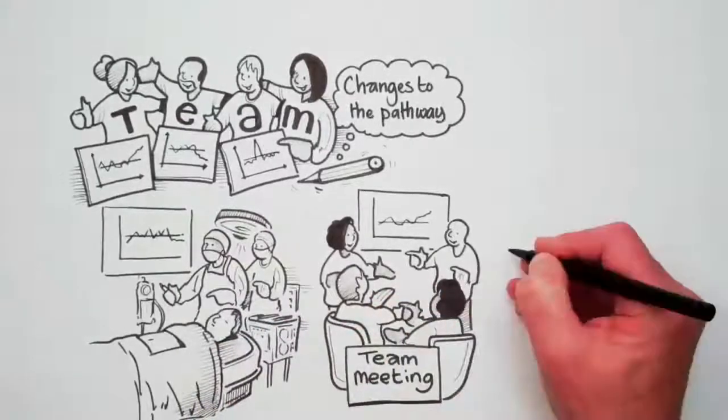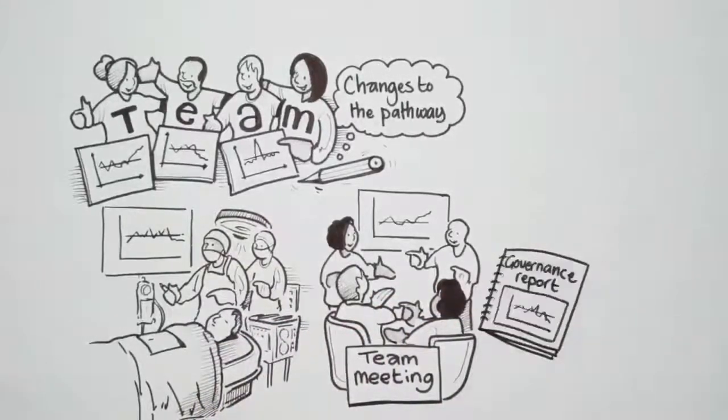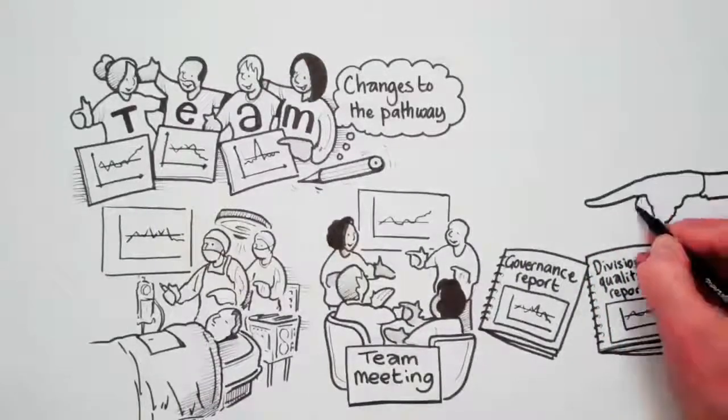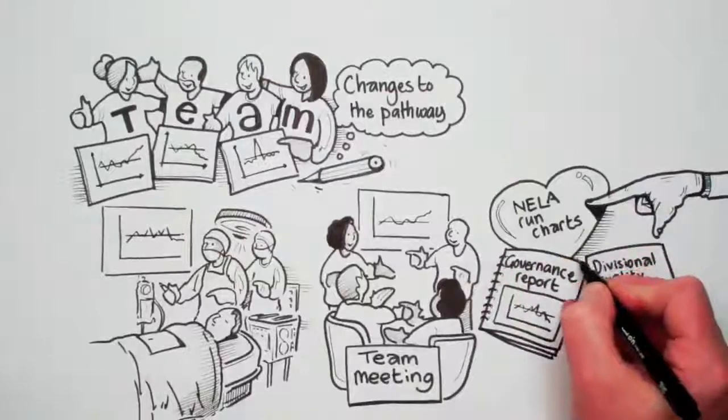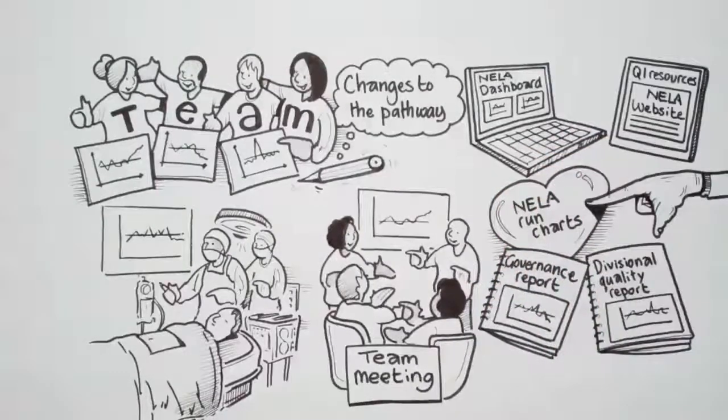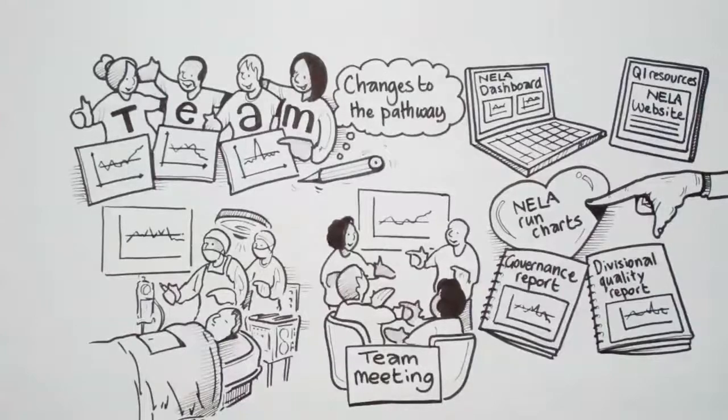They can form parts of governance reports or your divisional quality reports. So that's how to interpret your NILA run charts in brief. Have a look at yours on the NILA dashboard and check the QI resources on the NILA website if you want to read about them in more detail.